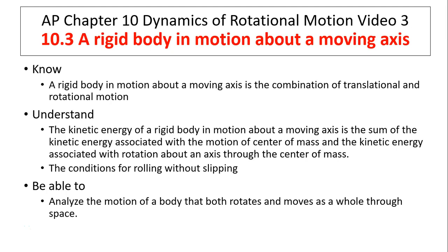Today's topic is Rigid Body in Motion about a Moving Axis. The objectives are: know that a rigid body in motion about a moving axis is the combination of translational and rotational motion; understand the kinetic energy is the sum of kinetic energy associated with the motion of the center of mass and kinetic energy associated with rotation about an axis through the center of mass; understand conditions for rolling without slipping; and be able to analyze the motion of a body that both rotates and moves as a whole through space.